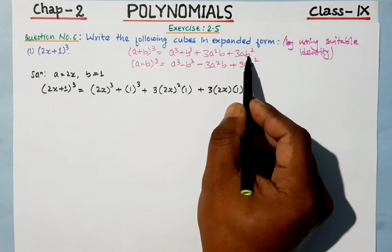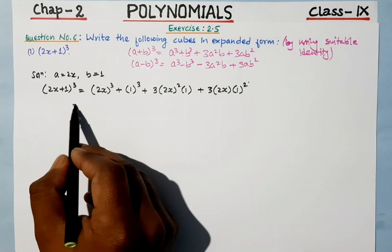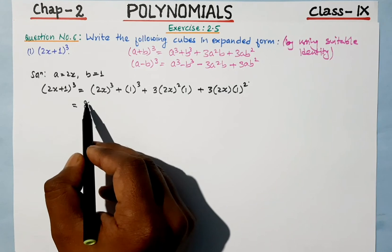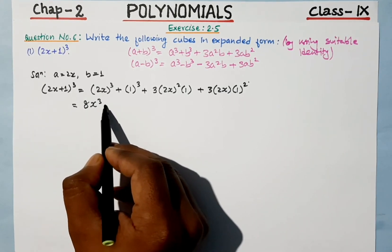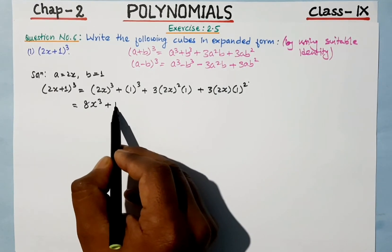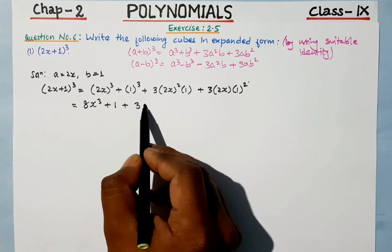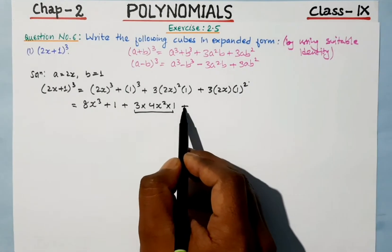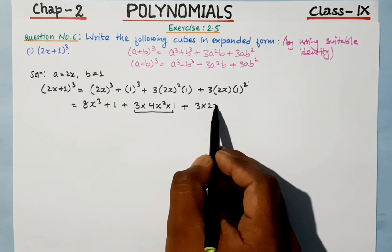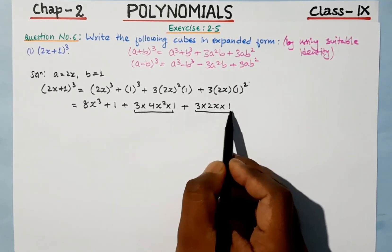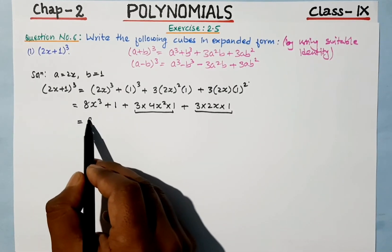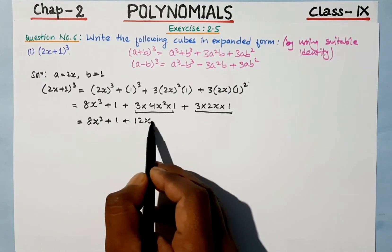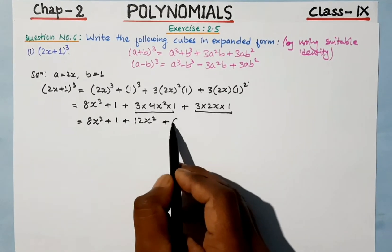Now let's expand. Two cube means 2 into 2 into 2, that is 8, so we get 8x cube. One cube is 1 into 1 into 1, which is 1. Then the first bracket: 3 into 2 squared is 4, so 3 into 4 x squared into 1 gives 12x squared. Then 3 into 2x into 1 squared is 1, giving 6x.